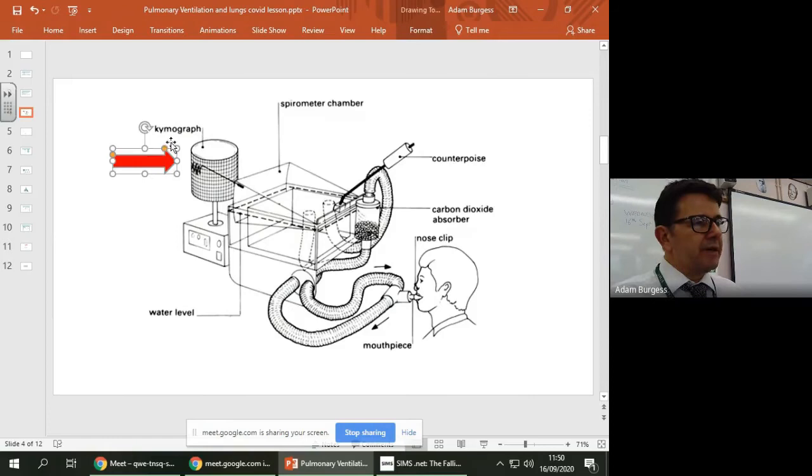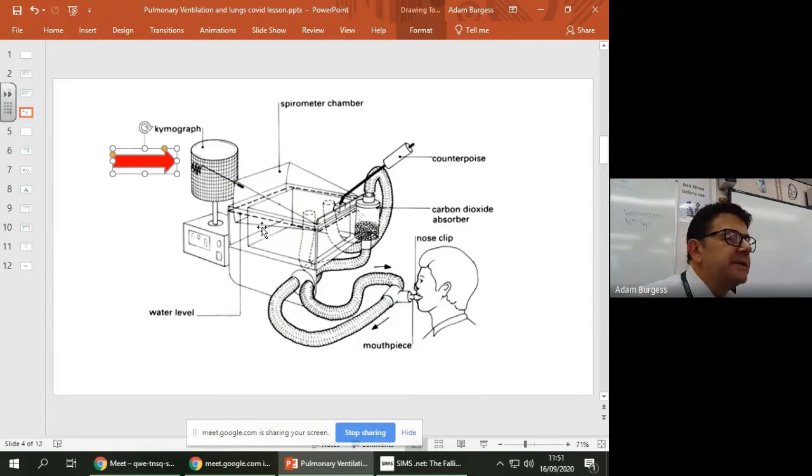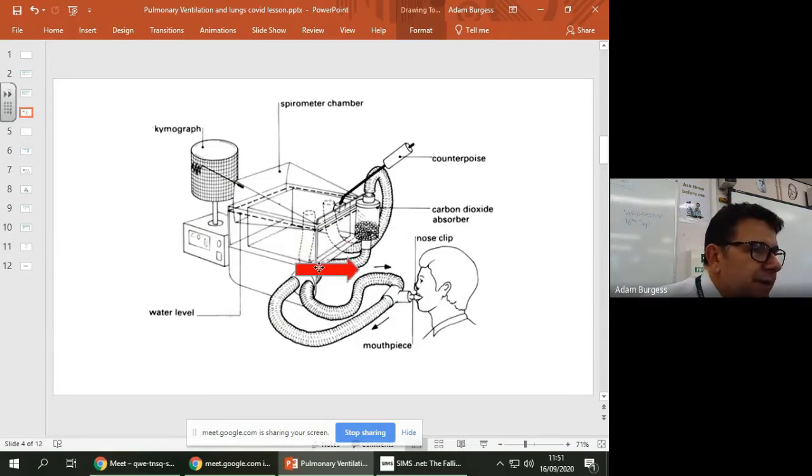Now this kymograph, it whizzes around and around and around, and as you breathe in and out, the wedge shaped part of spirometer moves up and down. Okay, so when you breathe out, it goes up, and when you breathe in, it goes down. And as you can see, when you breathe in, so the arrow here, so here when you breathe in,